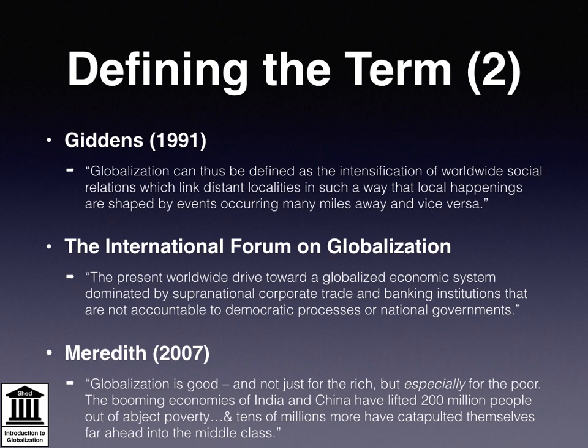To understand the range of opinions about the term and what it means, let's look at three distinct definitions. The first, from the sociologist Anthony Giddens, provides a clear and relatively objective view of globalisation. In his 1991 Consequences of Modernity, he writes: 'Globalisation can thus be defined as the intensification of worldwide social relations, which link distinct localities in such a way that local happenings are shaped by events occurring many miles away, and vice versa.'